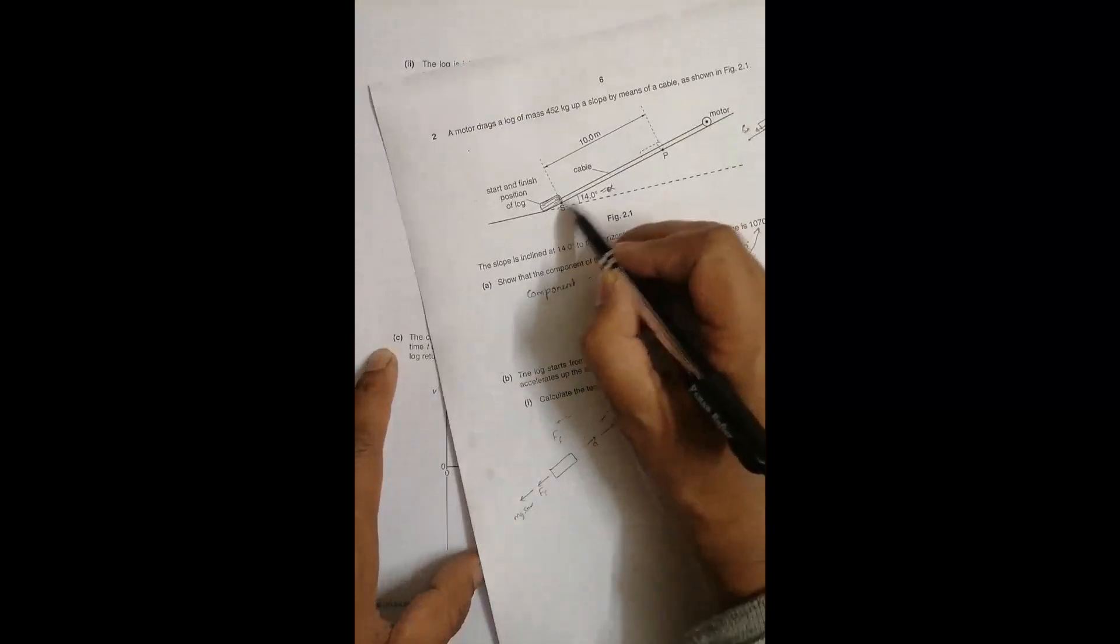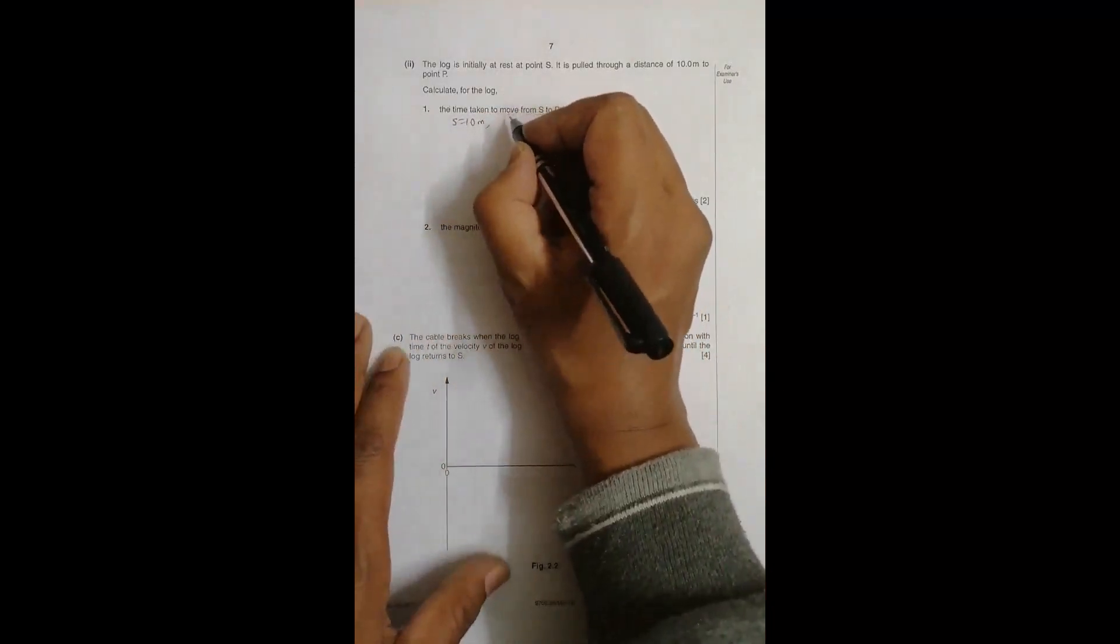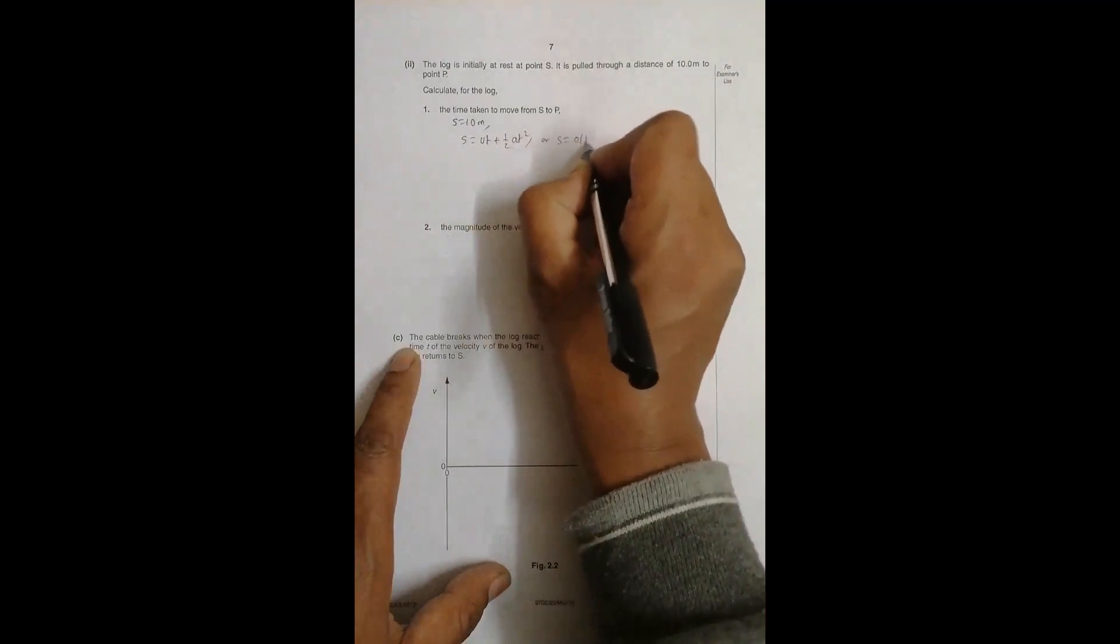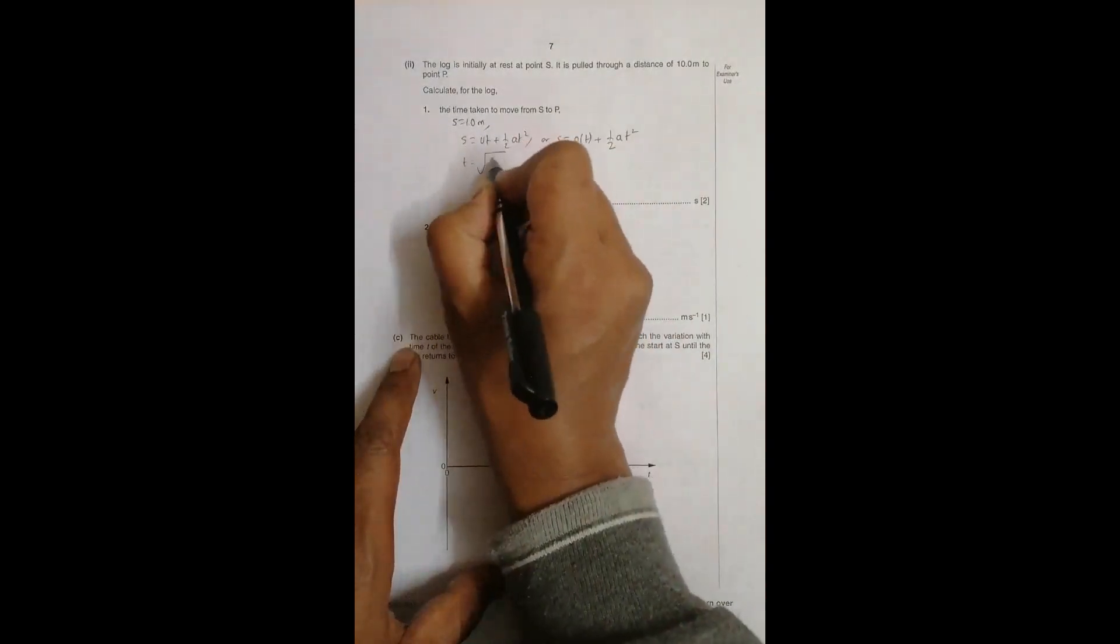The log is initially at rest at point S. It is pulled through a distance of 10 meters to point P. Calculate the time taken to move from S to P. Displacement S equals 10 meters. Using s equals ut plus half at squared, with initial velocity u equals zero, we get s equals half at squared, so t equals the square root of 2s divided by a.